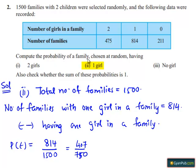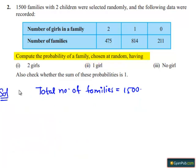Therefore, the probability of a family chosen at random having one girl is 407/750. Now moving on to the third part.